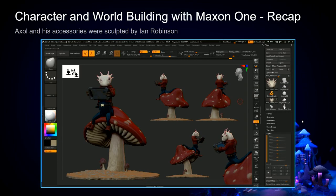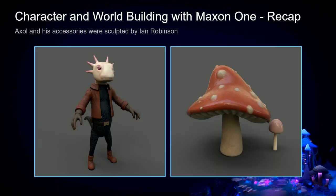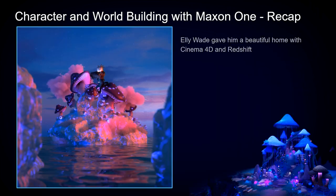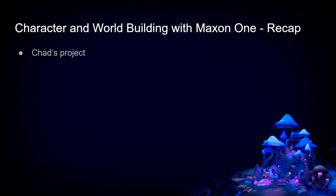As a recap for the other three parts of today's presentation: first, Ian Robinson, amazing Maxon ZBrush trainer, showed you how to create Axel in his little clothes and accessories in ZBrush, then hopped over to Substance Painter to show you how to texture it. Then Ellie gave him a beautiful, honestly adorable little home inside of Redshift and Cinema 4D. And Chad just got done showing you how to color grade and do some render passes on Ellie's work.